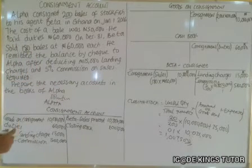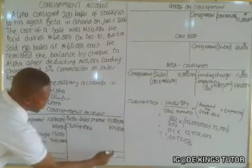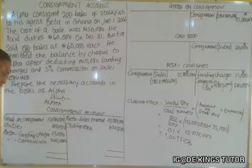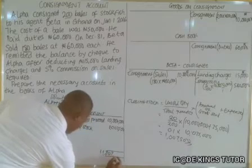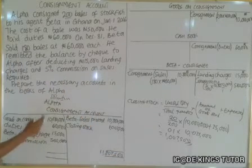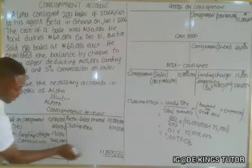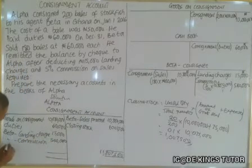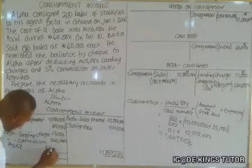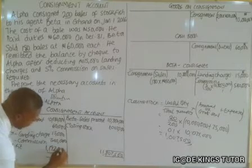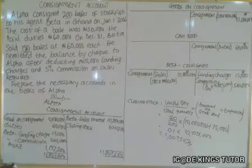Now we close the consignment account. Adding the credit side: 10,800,000 plus 1,007,500 gives 11,807,500. The debit side is less than this, so we have a profit. The profit is 11,807,500 minus the debit total, which gives us a profit of 1,192,500. Adding the profit to the debit side balances the account to 11,807,500. The closing stock of 1,007,500 is brought down as an opening balance for the next period.